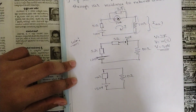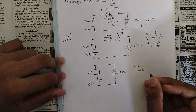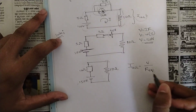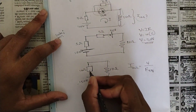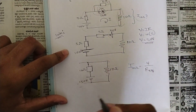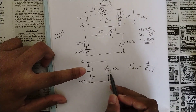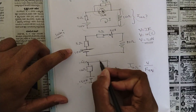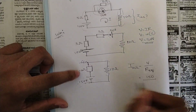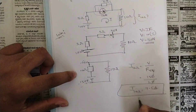Now our task becomes easier. We need to find the current through the 10 ohm resistance. The formula is I = V / R. The voltage source is 150 volt. The equivalent resistance is the series combination of the two 10 ohm resistances, which is 20 ohm. Therefore, I through 10 ohm = 150 / 20 = 15/2 = 7.5 ampere. This is the answer to the first simple problem.